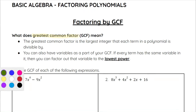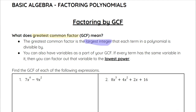The greatest common factor is the largest integer that each term in a polynomial is divisible by. You can also have variables as part of your GCF. So the GCF between numbers is the largest integer that can be divided into them. But also if each term has the same variable — not necessarily the same exponent — then that variable is going to be part of your GCF as well. Let's look at two examples.